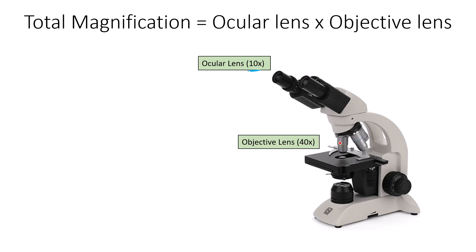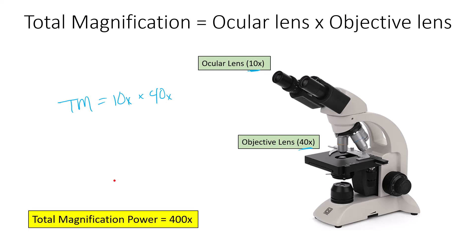The objective lenses range from 4 to 100 times. For example, using a 40x objective: total magnification equals 10x (ocular) times 40x (objective) = 400x total magnification. If we used the 100x objective instead: total magnification equals 10x times 100x = 1000x. As you increase the objective lens magnification, it combines with the ocular lens to provide an increased overall magnification.